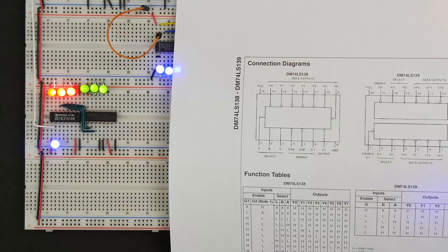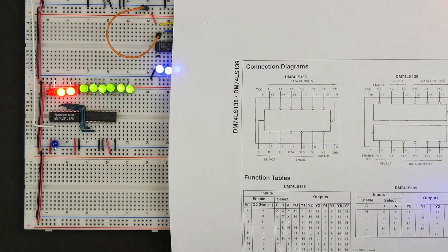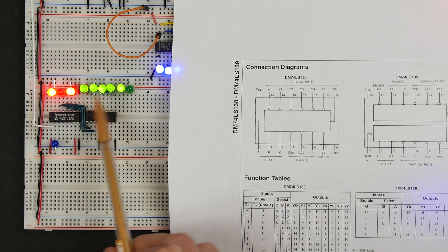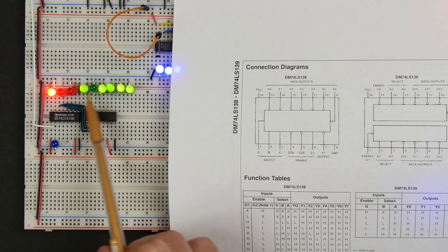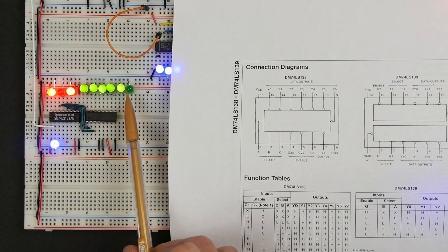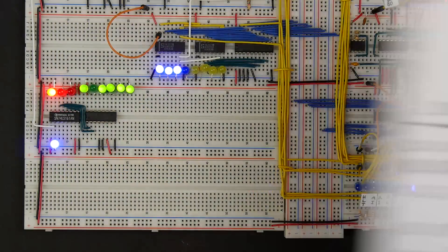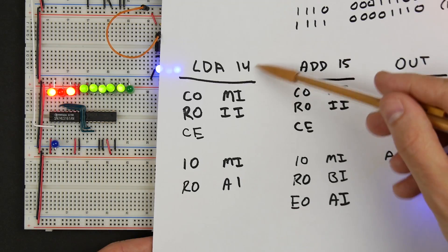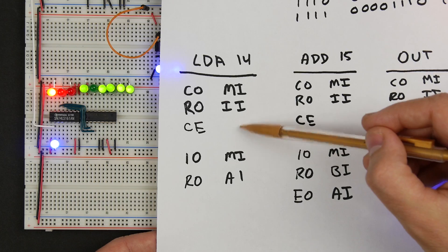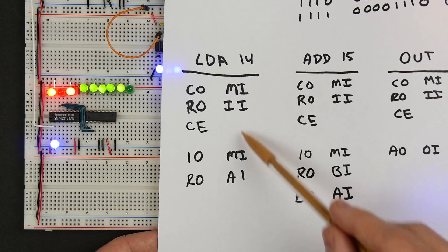I've hooked up LEDs to the first six outputs of the 74LS138. You can see that as the counter increments — 0, 1, 2, 3, 4, 5, 6, 7 — the corresponding output goes low in sequence, cycling back to 0. This gives us a separate decoded signal for each micro-instruction step, so our logic can easily detect which step we're currently on.